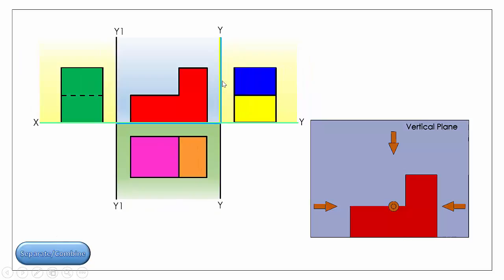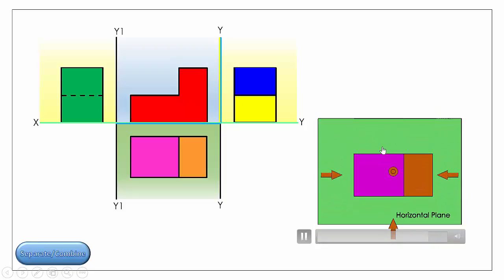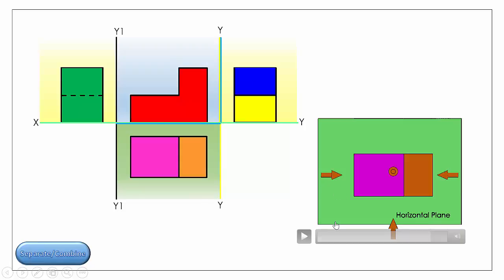Looking from our front elevation, the YY line represents our end vertical plane. Yet at the same time, looking in my end view the same line is going to represent my back wall — our vertical plane seen from the side. The same line represents our end vertical plane when seen from the front. Following it further, looking from above we can see the same edge, and the continuation down here represents our end vertical plane when seen from above.